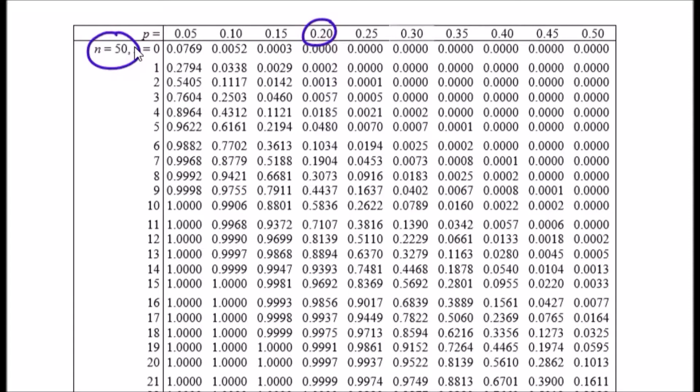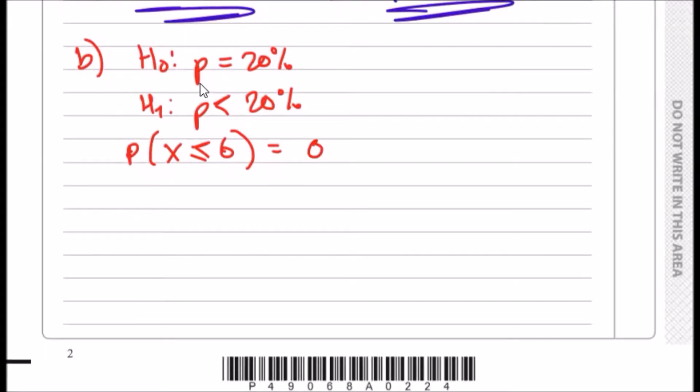When x equals 6, so this would be probability X is less than 5%, this would be probability X equals 6, we should get exactly 0.1034. Let's write this down: 0.1034.